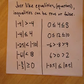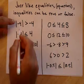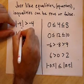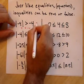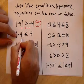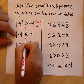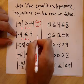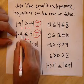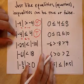Just like inequalities, inequalities can be true or false. Let's look at these guys quick. Is the absolute value of 4 greater than negative 4? Yes, true. Let's see this guy. Is the absolute value of 4 less than or equal to 4? Yes, true, because it's equal to 4. So saying less than or equal to is true. We'll talk about that later on.